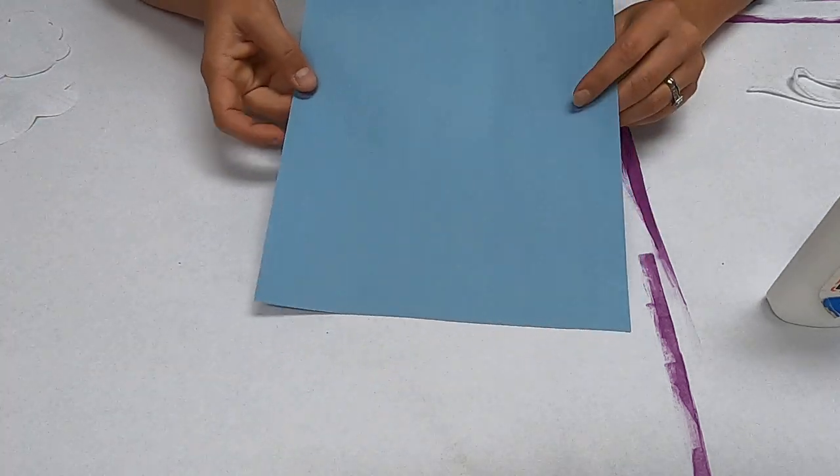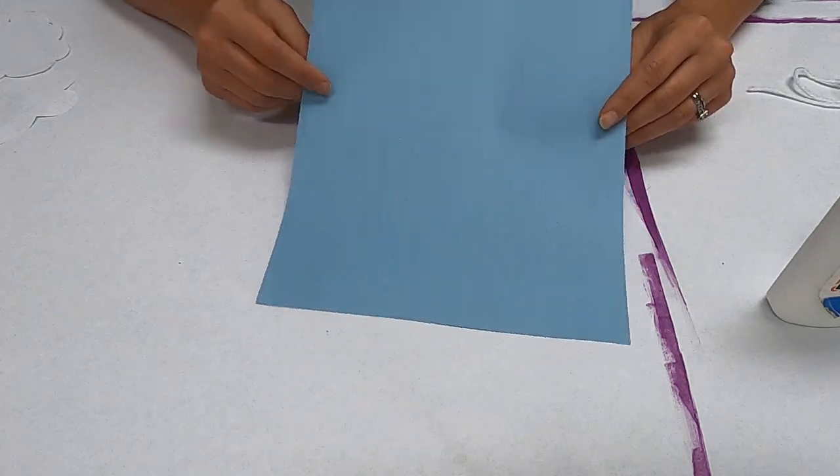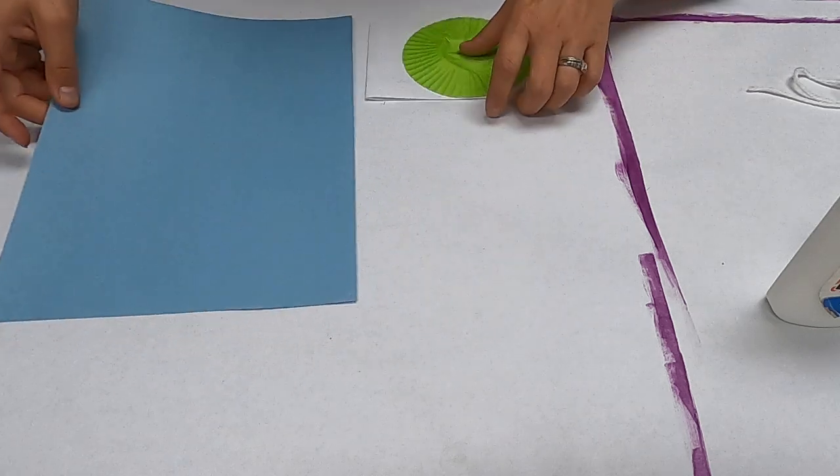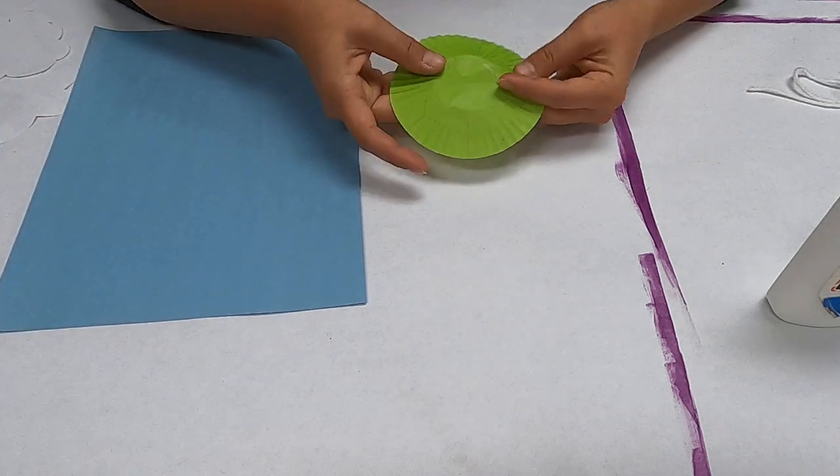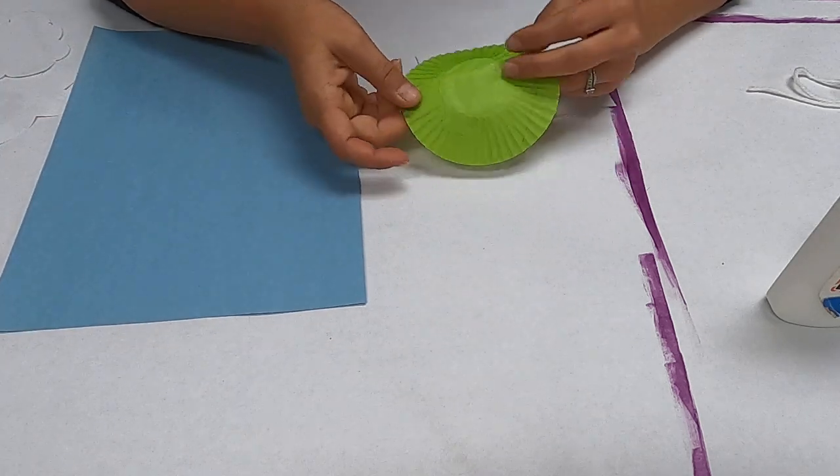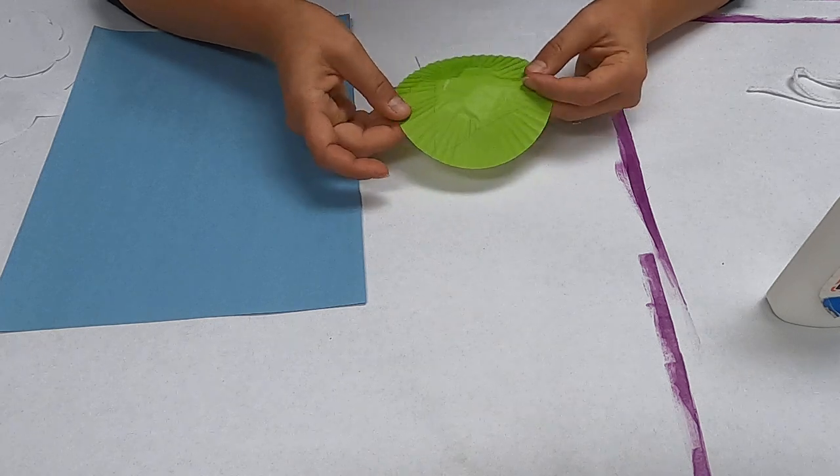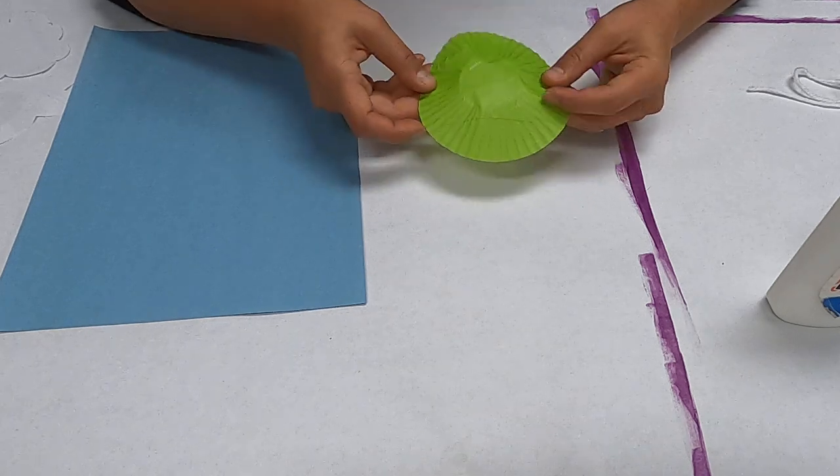So what you need is a background piece of paper. I chose blue because this will be our sky. You need a cupcake liner. Any color will do. If it has patterns on it, that's great. If it's blank, that's okay. You can always decorate it.